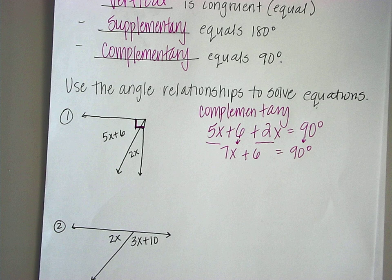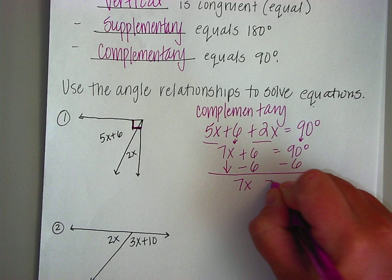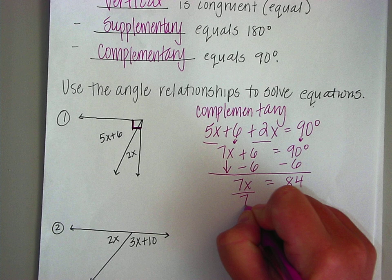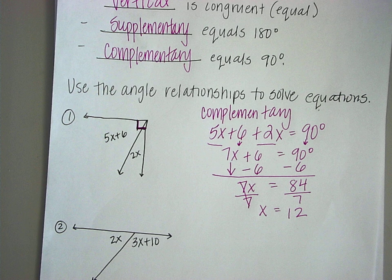Since we have no more like terms, we need to move the numbers to the right-hand side. Do the opposite when crossing over the equal sign — subtract 6 on both sides, because you need x's on one side and numbers on the other. 90 minus 6 is 84. Divide by 7 because you want to get x by itself — 7 times x — and you get x equals 12.